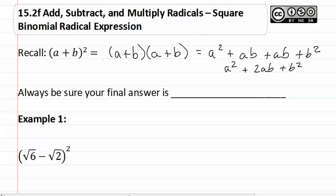Many of you had learned the shortcut to get from here to here, in that you square the first, you add two of each term multiplied together and then square the last. You can still use this shortcut. And as always, be sure your final answer is simplified.